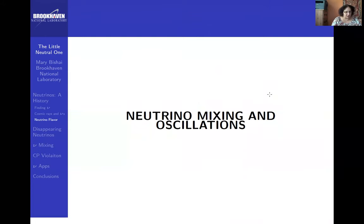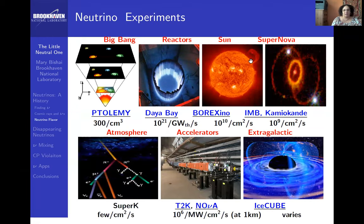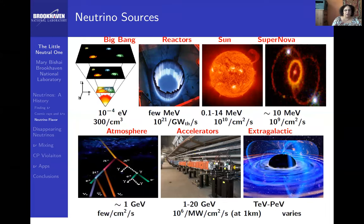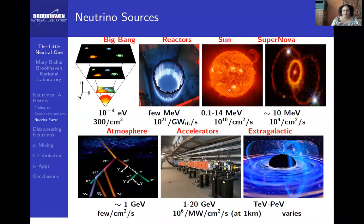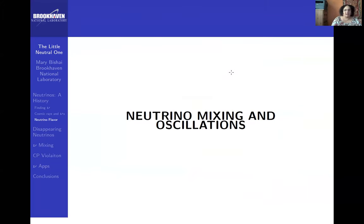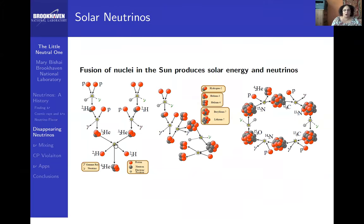Now I'm going to talk about neutrino mixing and oscillations and go through the history. Going from the very lowest energy neutrinos, a big source of neutrinos are the fusion processes in the sun. Just like fission produces neutrinos from the radioactive decay of fission products, the sun when it fuses produces neutrinos as well, and the process in the sun is quite complicated.